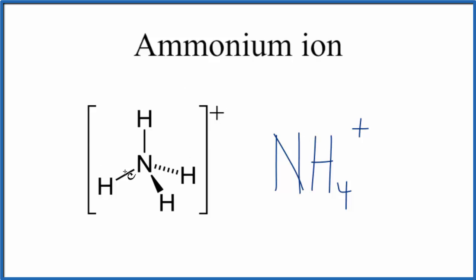The positive charge resides on the nitrogen here. When we write the Lewis structure, we just put it outside the brackets. This is the formula for the ammonium ion.